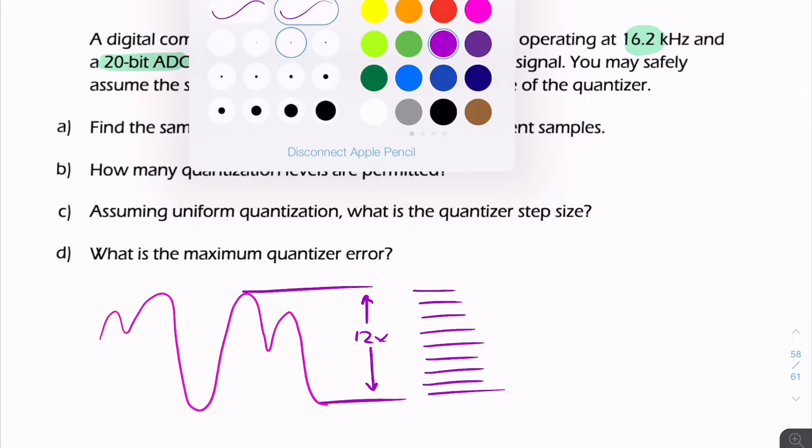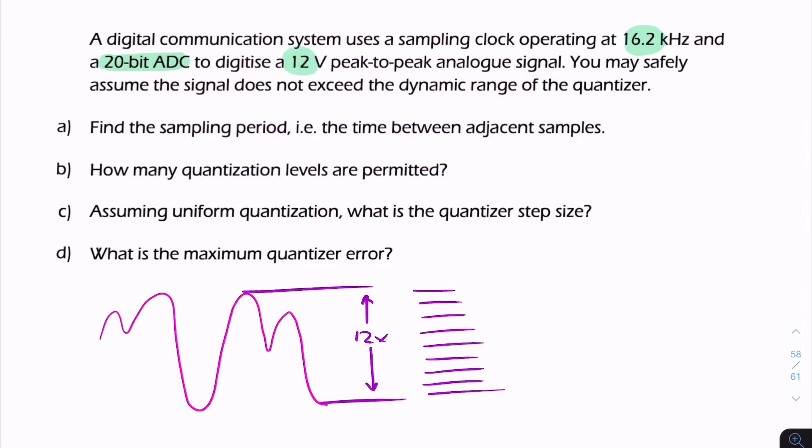The sampling period is the reciprocal of the sample rate. The sample rate is the clock given there, so Ts is just 1 over Fs, which is 1 over 16.2 thousand, giving us 61.7 microseconds.